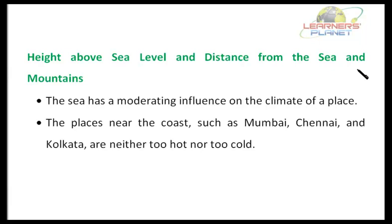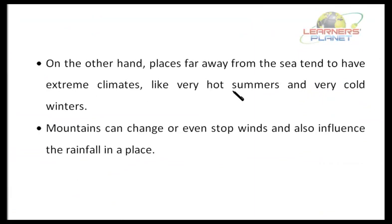Now let us discuss about height above sea level and distance from the sea and mountains. Have you ever thought about why people go to a hill station during summer season? It is because it is cooler in a hill station — the higher a place is, the cooler it is. Even the sea has a moderating influence on the climate of a place. Places near the coast such as Mumbai, Chennai and Kolkata are neither too hot nor too cold. On the other hand, places far away from the sea tend to have extreme climates — very hot summers and very cold winters. Mountains can also change or even stop winds and influence the rainfall in a place.